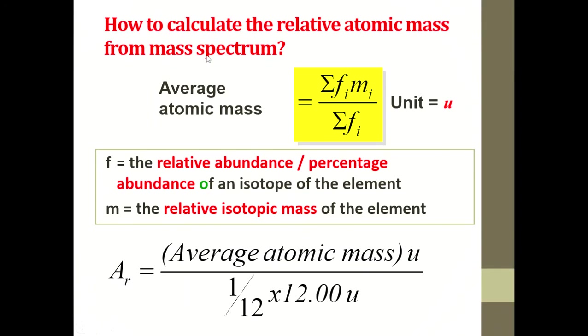So now let's calculate the relative atomic mass from mass spectrum. This is a general statistical formula which I'm sure you have learnt before. This Greek symbol is a sigma which means sum up. So you sum up the frequency. Frequency here refers to the relative abundance or percentage abundance of an isotope of the element. And you multiply it by the mass. So the total number of frequency multiplied by mass divided by the sum of the frequency or the total percentage. It can be 100, it can be 25, so we need to find that out and we'll look at the calculation after this. The unit is atomic mass unit or U.